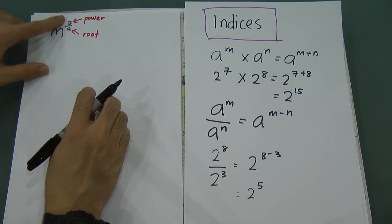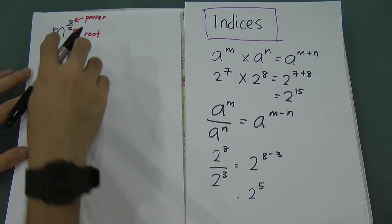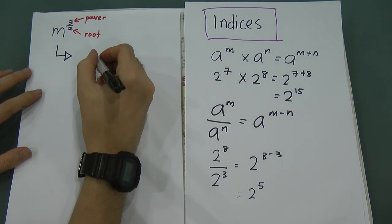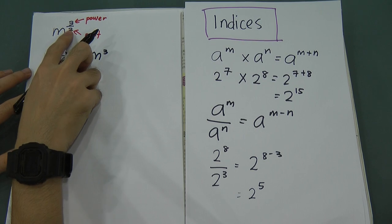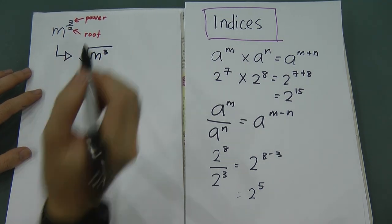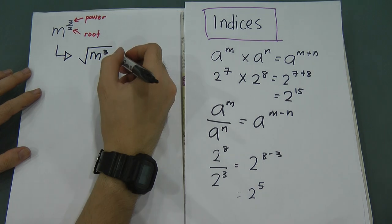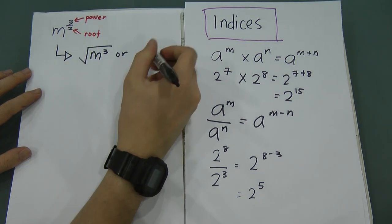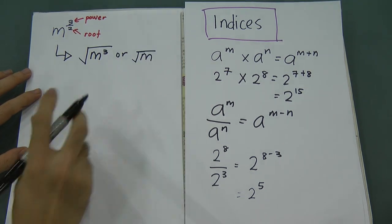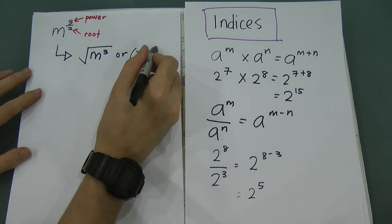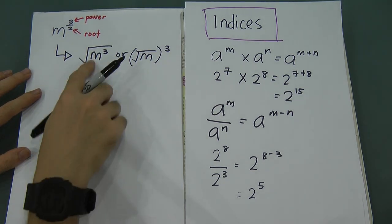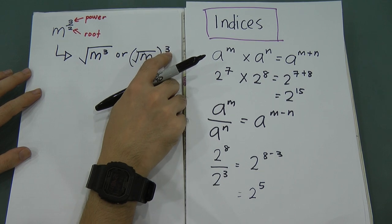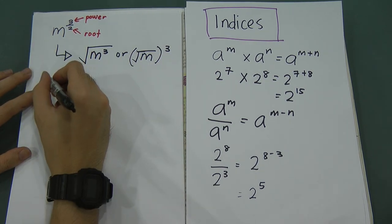So m to the power of 3 over 2 can be written as m cubed under a square root, or equivalently as the square root of m, raised to the power of 3. Both give the same value. You can write the square root first or the power first.